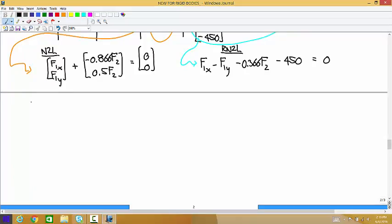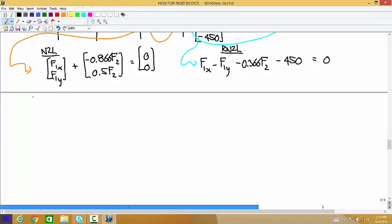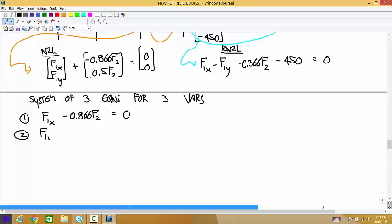So now we have three equations. This is a system of three equations for three variables. The first one says F1,X minus 0.866 F2 is equal to 0. The second one says F1,Y plus 0.5 F2 is equal to 0. And the third one says F1,X minus F1,Y minus 0.366 F2 is equal to 450.